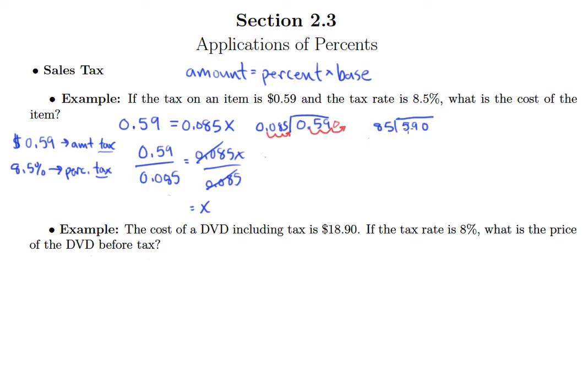85 doesn't go into 5, it does not go into 59, but it does go into 590 and that will happen six times. So 6 times 5 is 30, 6 times 8 is 48 plus 3 is 51.